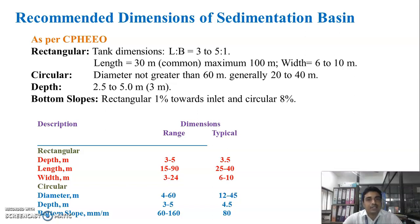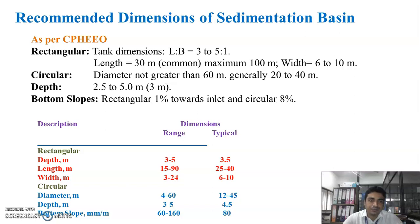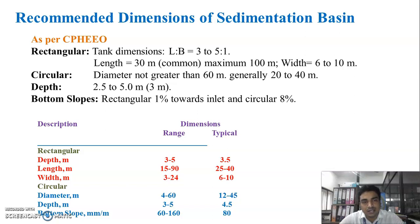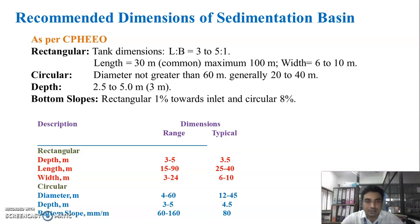For circular type sedimentation tank, the diameter should not be greater than 60 meters, and it is generally taken as 20 to 40 meters. The depth of the sedimentation tank should be about 2.5 to 5 meters, and generally we take it as 3 meters. For bottom slope for sludge accumulation: for rectangular type it is 1% toward the inlet, and for circular type it is 8%.